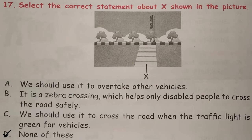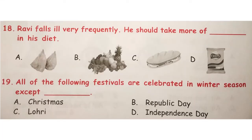None of these. Ravi falls ill very frequently. He should take more of dash in his diet. Answer is option B, which contains fruits and vegetables that are examples of healthy food. Healthy food makes our body strong and healthy. So the answer is option B.